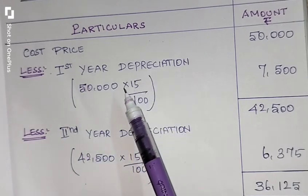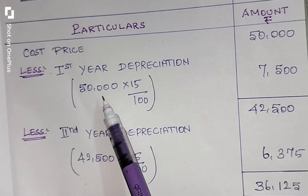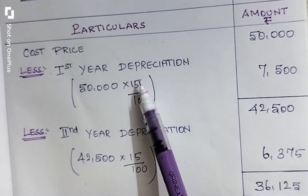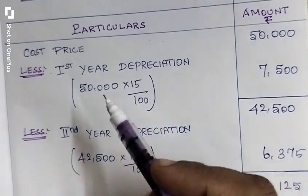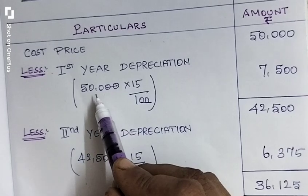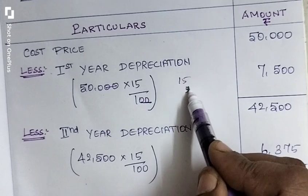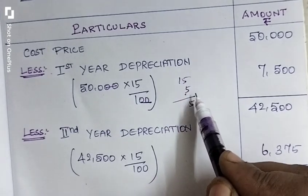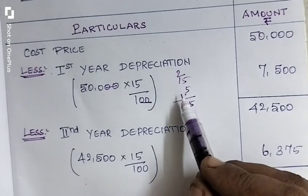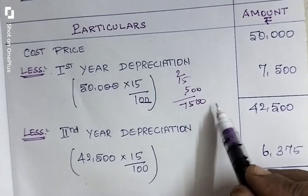Let's find the first year depreciation. We have to multiply the cost price by the depreciation percentage, that is 15%, 15 by 100. This 2 zeros cancel with these 2 zeros. Remaining 15 into 500. 15 times 5 is 75, 5 times 5 is 25 remaining 2, 1 times 5 is 5 plus 2 is 7.